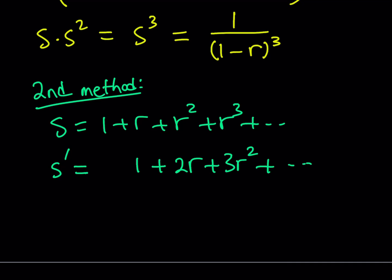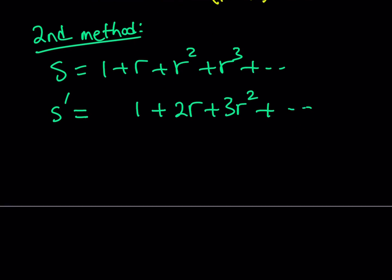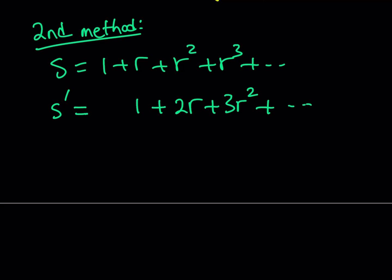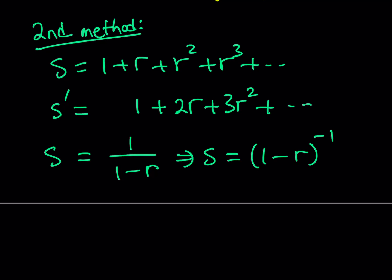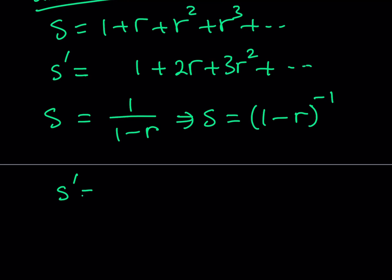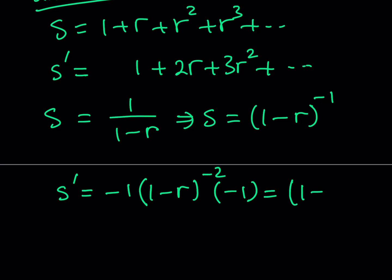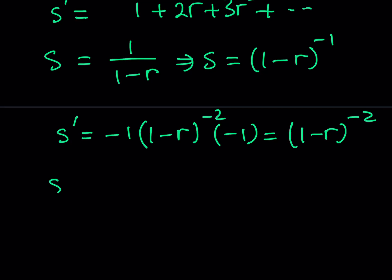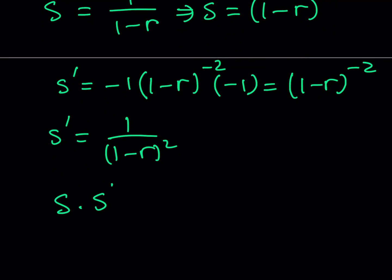You evaluated this sum as S squared using method one, but it happens to equal S prime — which is fine. So this sum is going to be multiplied by S. With S being 1 over (1 minus r), I need to calculate the derivative of S. To make differentiation easier, write it as (1 minus r) to the power negative one. When you differentiate using the chain rule, you move the power down to negative one, reduce the power, and multiply by the derivative of the inside — which is the derivative of (1 minus r) with respect to r, giving negative one. The negatives negate each other, and we end up with (1 minus r) to the power negative two, which means the sum equals 1 over (1 minus r) squared. We're supposed to multiply this by S, and that gives us the final answer.